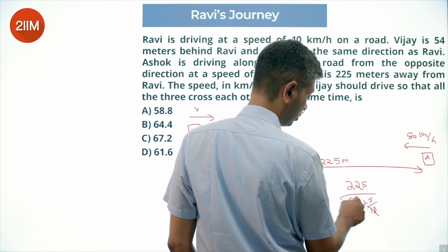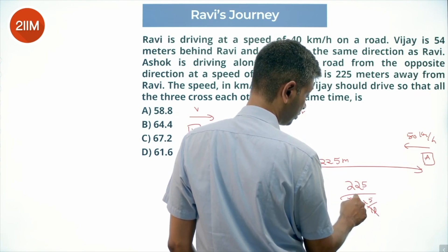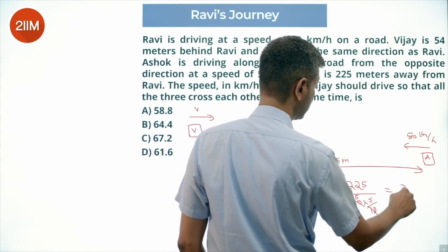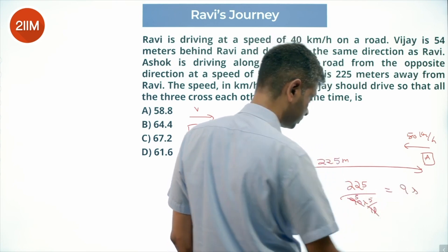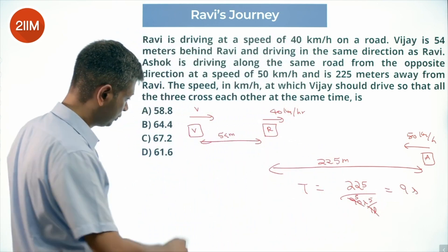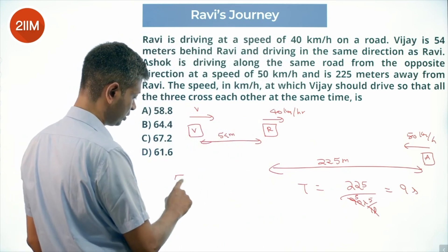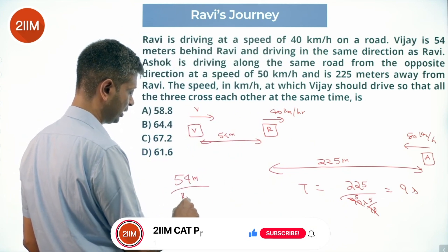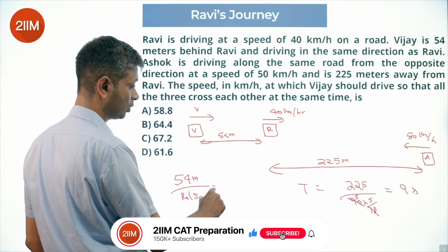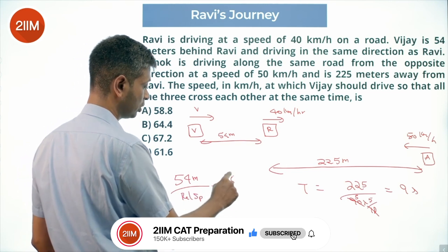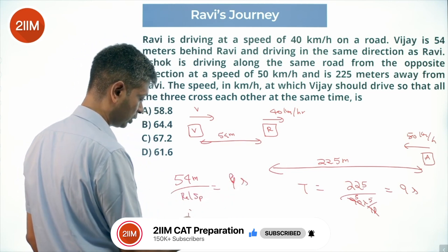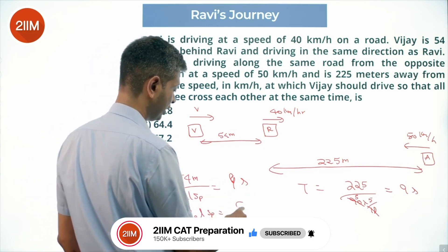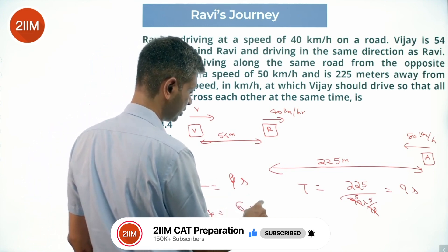90 multiplied by 5/18: 90 divided by 18 is 5, so the time is 25/9 seconds. For Vijay to catch up with Ravi in the same time: 54 meters divided by relative speed equals 25/9 seconds, so the relative speed is 54 divided by 9, which is 6 meters per second.